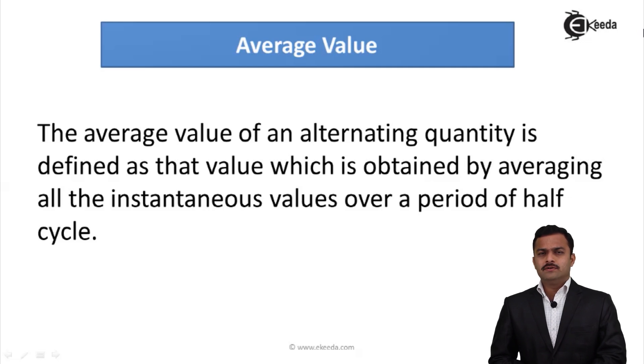Now why half cycle is required for calculation of average value? Because AC waveform we have seen that it is a sinusoidal in nature. It has two positive as well as negative half cycles which are identical.